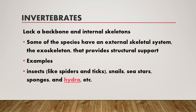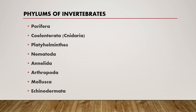In invertebrates, they lack a backbone and internal skeleton. Some species have an external skeleton system — they will be called exoskeleton — which provides structural support. Examples include insects like spiders. Phyla of invertebrates include Porifera, Nematoda, Arthropoda, Mollusca, and others.